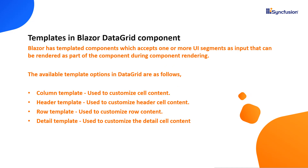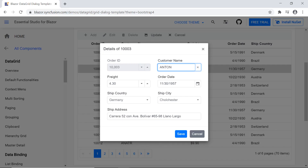The DataGrid is a templated Blazor component, meaning you can customize different parts of the UI using the template parameter. You can also use your own logic based on custom components or content. In some cases, you might need to add new field editors to the edit dialog that are not present in the column model. The template dialog will help you customize the default edit dialog in such cases.